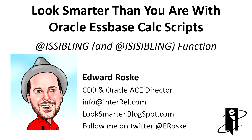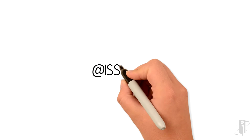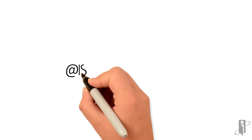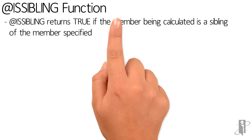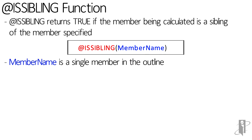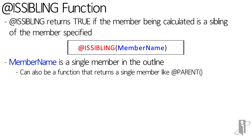Welcome to the isSibling function. isSibling tells you if the member currently being calculated is a sibling of the member that you specify. A sibling just means that it has the same parent as the member you're on. You call isSibling with a specific member name or a function that returns a specific member name, like @Parent or @Ancestor.